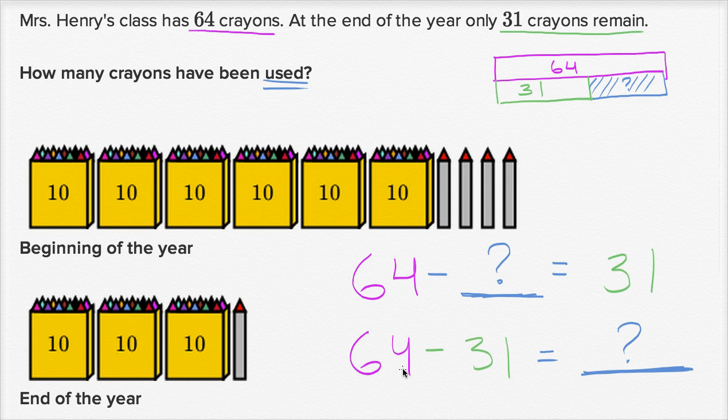So we just have to figure out what 64 minus 31 is. And let's do that. Let's do that right over here. So 64 minus 31. Minus 31. And it's going to be equal to. So let's look at the ones place. Four ones minus one one is going to be three ones. Six tens minus three tens is three tens. So the blank is 33.